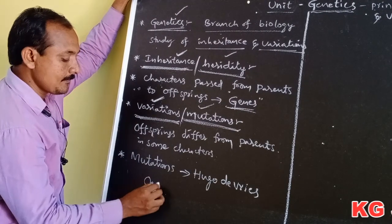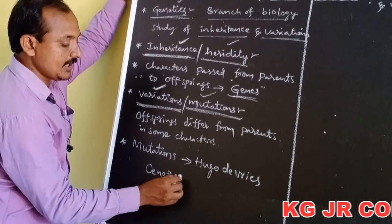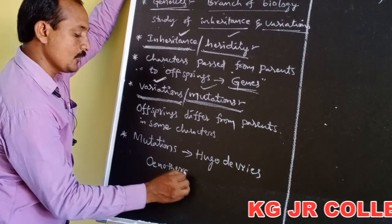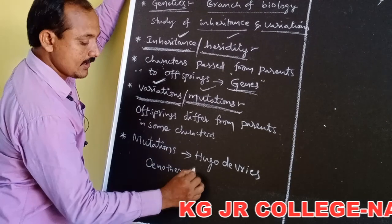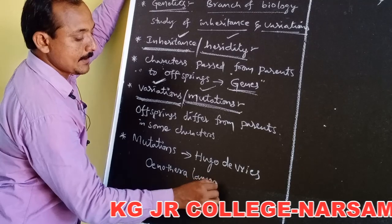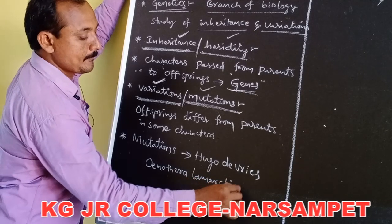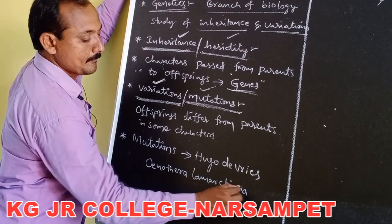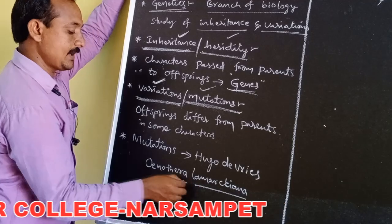Hugo de Vries discovered mutations in Oenothera lamarckiana, the Evening Primrose plant.